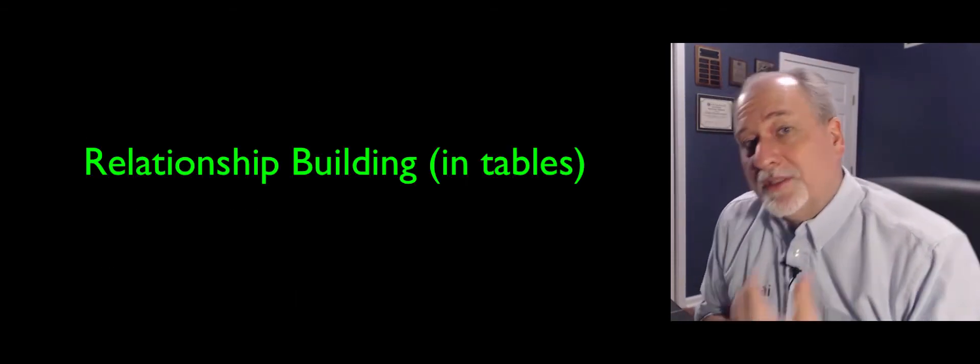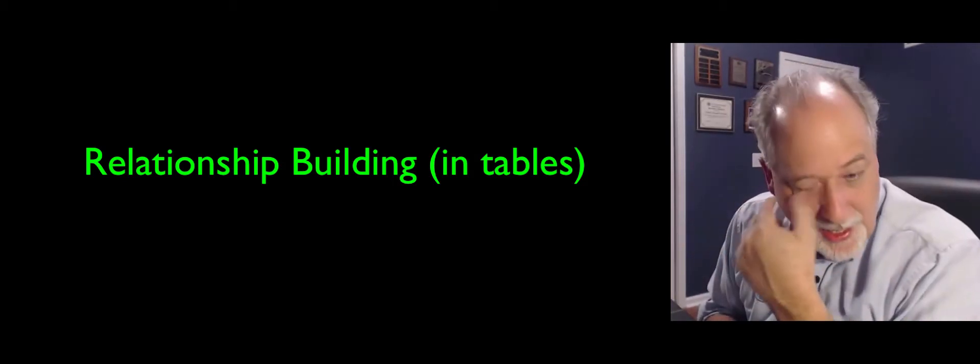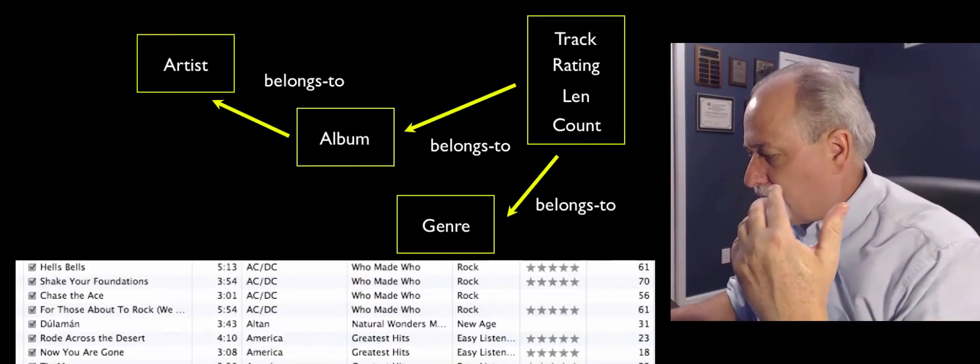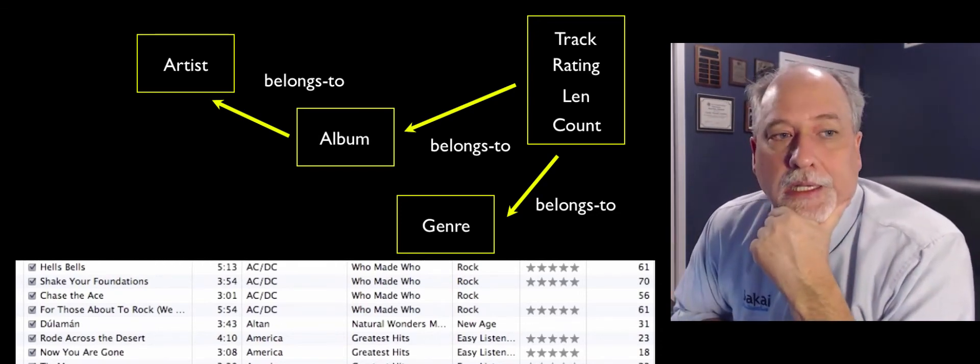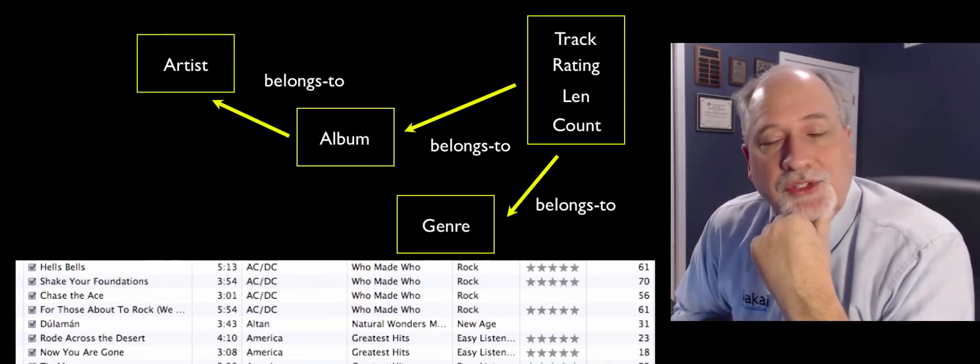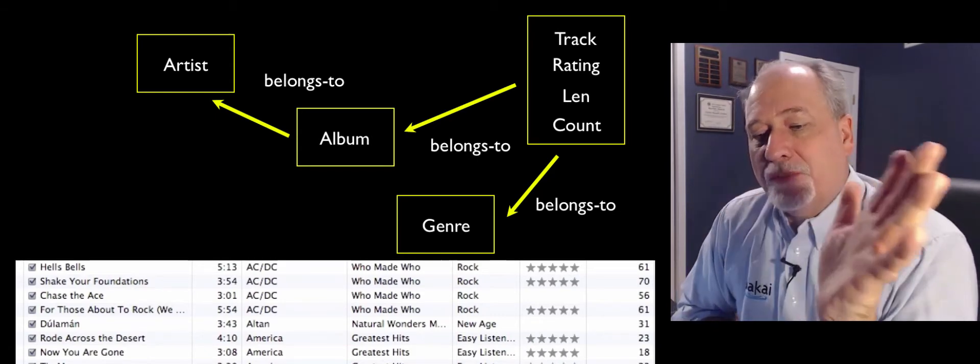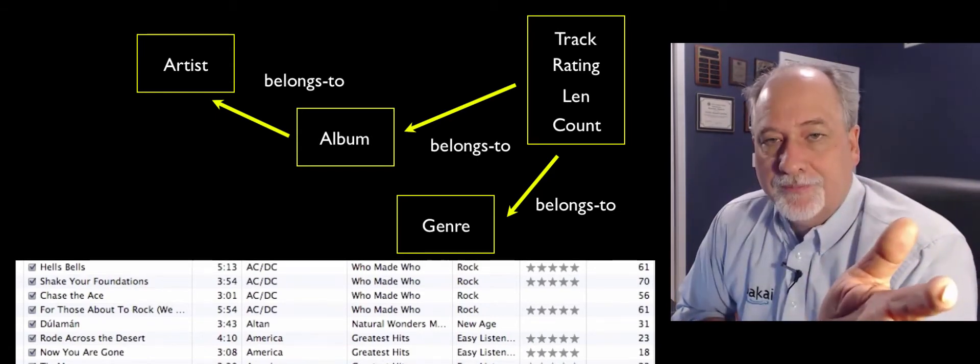So now we have this concept of primary key, logical key, and foreign key. And so what we wanna do is we wanna take our picture, and we wanna turn it into tables. So we have to add some bookkeeping columns. Some columns that are there just for the purpose of bookkeeping.